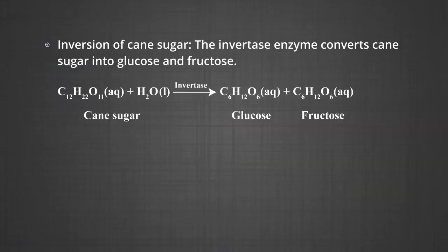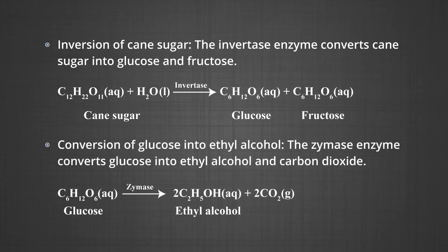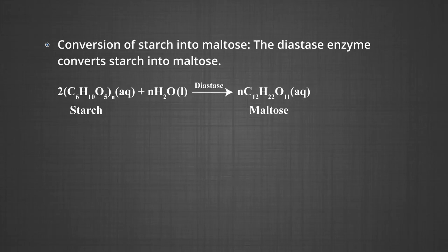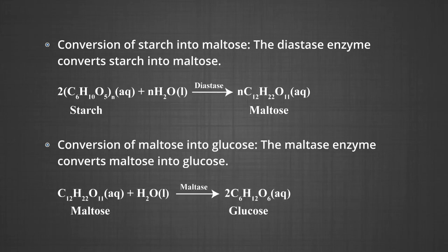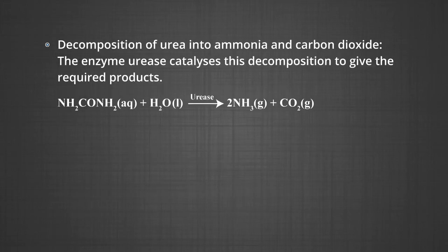Some examples of enzyme catalyzed reactions: Number one, inversion of cane sugar — the invertase enzyme converts cane sugar into glucose and fructose. Number two, conversion of glucose into ethyl alcohol — the zymase enzyme converts glucose into ethyl alcohol and carbon dioxide. Number three, conversion of starch into maltose — the diastase enzyme converts starch into maltose. Number four, conversion of maltose into glucose — the maltase enzyme converts maltose into glucose. Number five, decomposition of urea into ammonia and carbon dioxide — the enzyme urease catalyzes this decomposition.